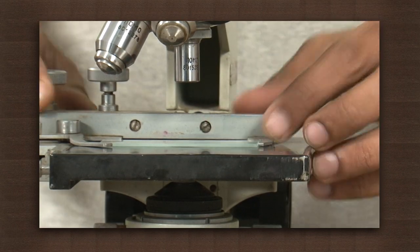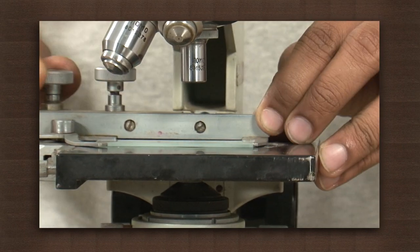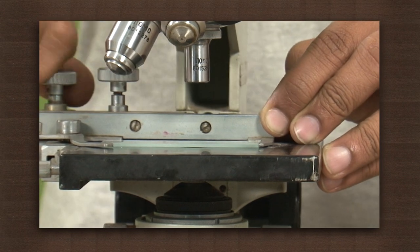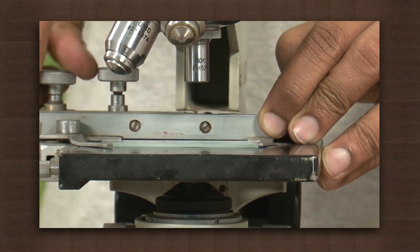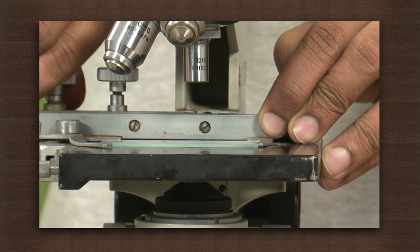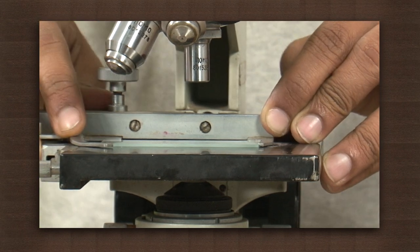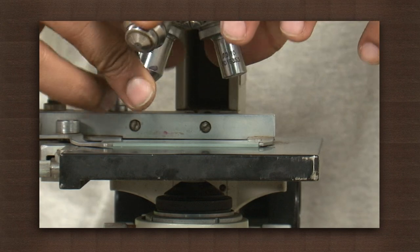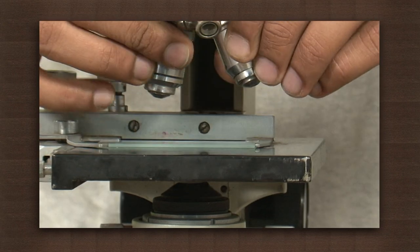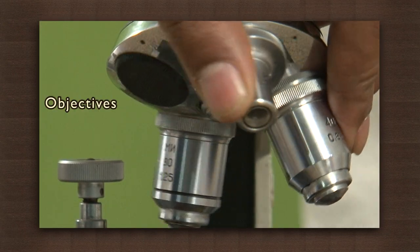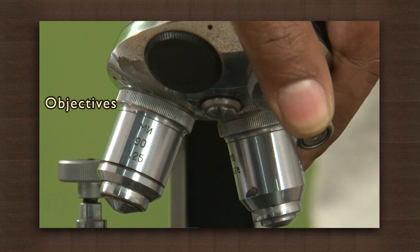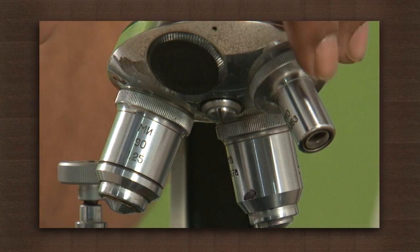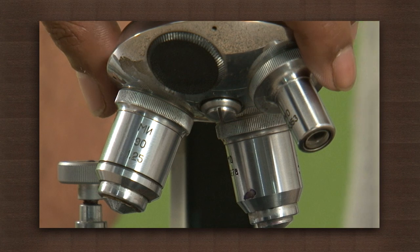The specimen is usually mounted on a glass or quartz slide, which allows light to pass through and fall on the object. The light that comes from the slide is collected by the objective, which is made up of multiple convex lenses. A typical microscope has three sets of objectives which form images magnified ten times, 45 times, and 100 times.